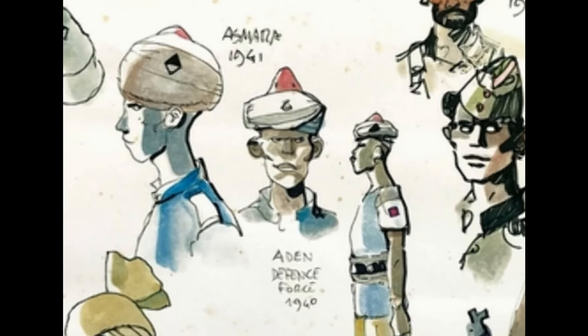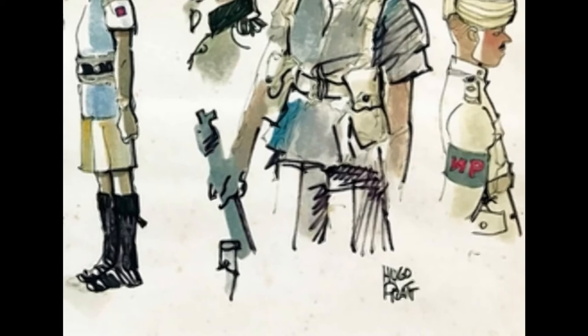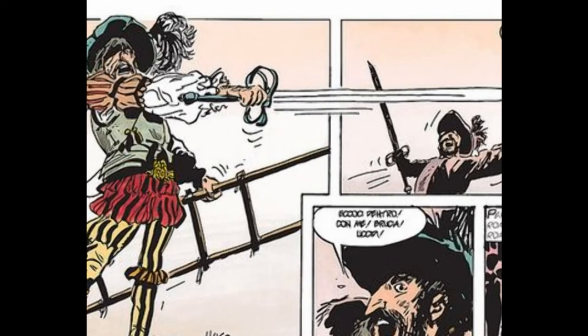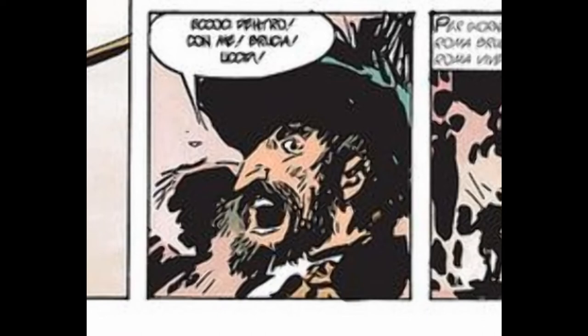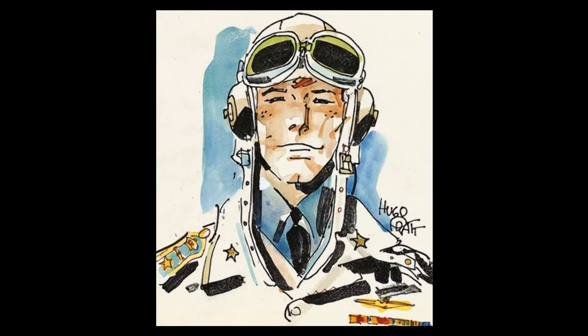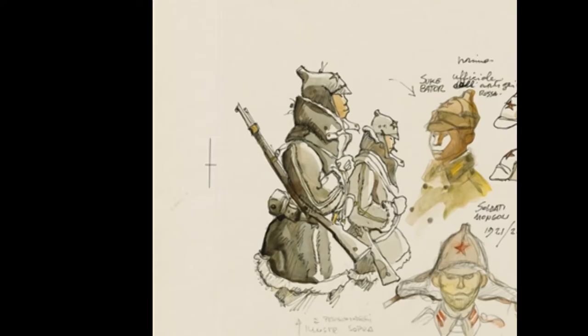Almost all of his characters are not enlisted soldiers, but mercenaries, pirates, adventurers, deserters, or simply men looking for something in the middle of conflict. Pratt clearly likes to take sides in his stories, narrating the tale of people who didn't care for the conflict or were on the losing side, because, as he said in an interview, history was written by winners — but if we look at it from the losing side, we find beautiful stories that deserve to be told.